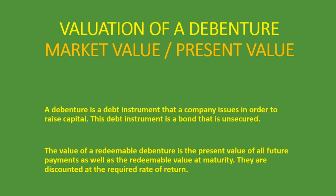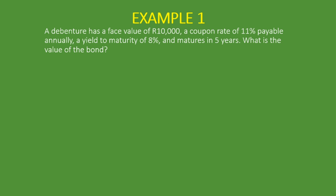The required rate of return is the yield to maturity. We're going to jump straight into the example — the same example from the other lesson. We are told that a debenture has a face value of R10,000, a coupon rate of 11% payable annually, a yield to maturity of 8%, and it matures in five years. What is the value of the bond?